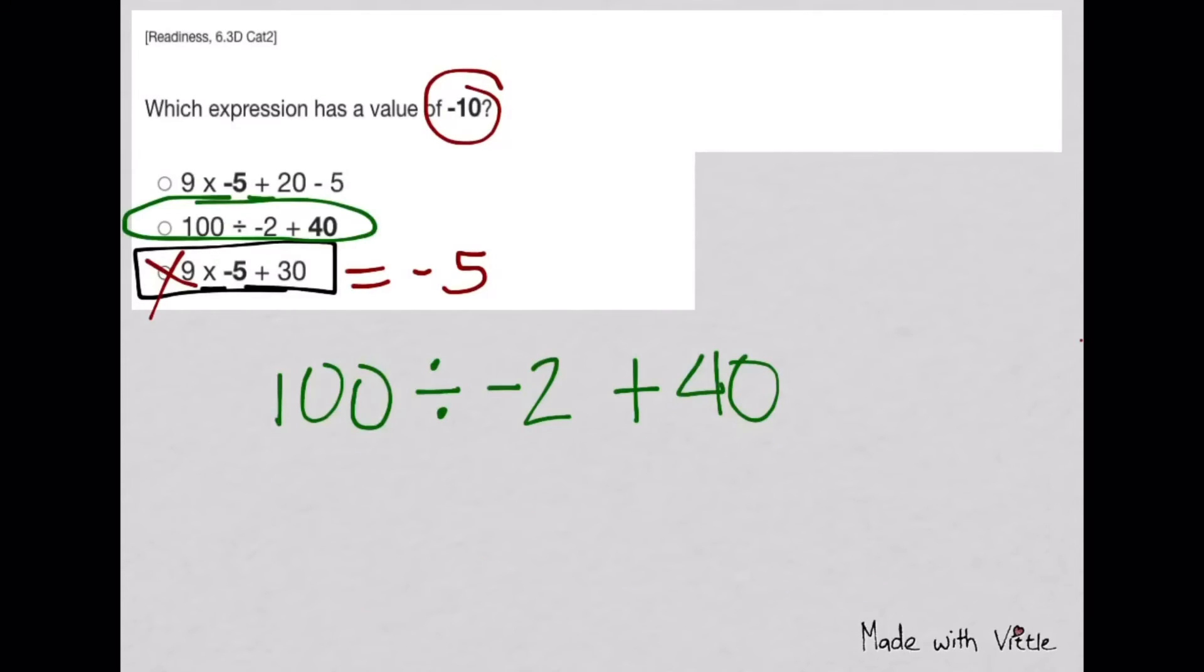Now let's try the other expression. You divide first before you add. One hundred divided by negative two is negative 50. Then bring down the rest of the expression. Apply the rules in adding integers - different signs you subtract and copy the sign of the one farther from zero or has a higher absolute value. This is the expression we're looking for that has a value of negative 10.